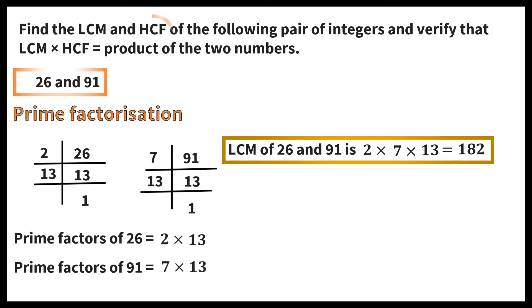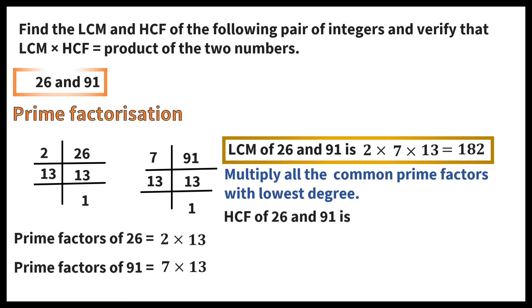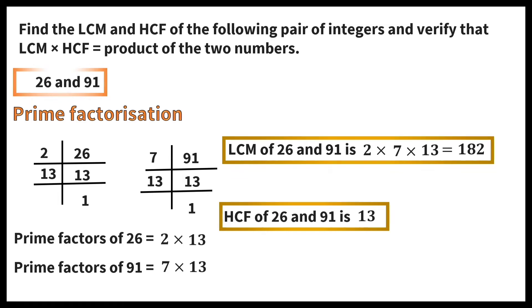We can get HCF if we multiply all the common prime factors with the lowest degree. So HCF of 26 and 91 is 13 because 13 is the common factor to both with its highest degree 1.